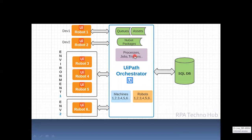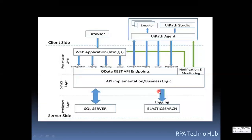When you have multiple robots connected to Orchestrator, the architecture would look like this. On the top you see the development robots, which are dedicatedly used to configure the bots. Once the bots are configured, they will be published from development robot machines to Orchestrator. The robots are grouped together in an environment, and these robots are called runtime resources, which are dedicatedly used for executing the business processes.